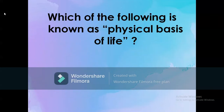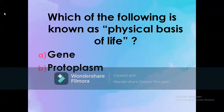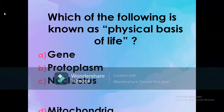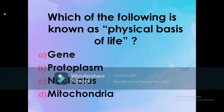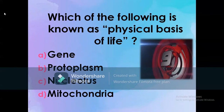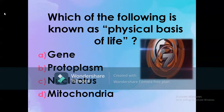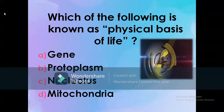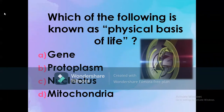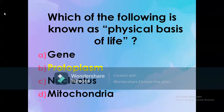Which of the following is known as the physical basis of life? A) Gene, B) Protoplasm, C) Nucleolus, D) Mitochondria. The correct option is B: Protoplasm. Protoplasm is known as the physical basis of life.